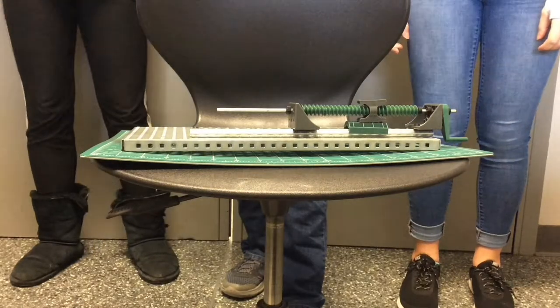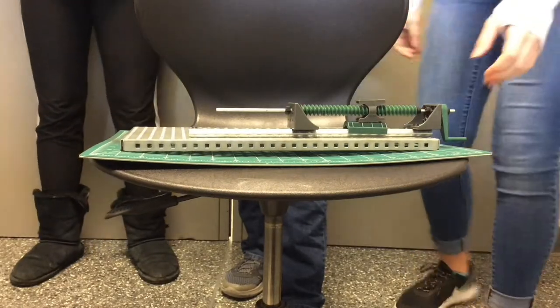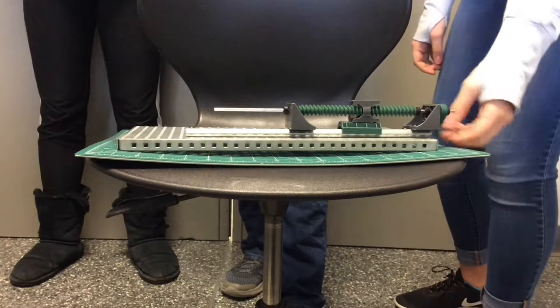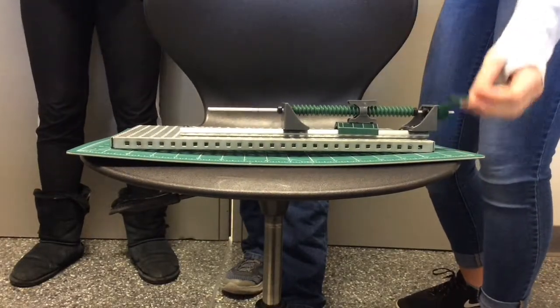The input gear on our mechanism is rotary, and the output gear is linear. The input motion is torque because it rotates, and the output motion is linear because it goes back and forth in a straight line.